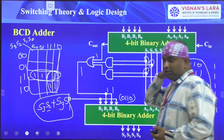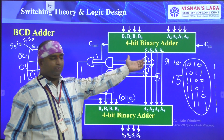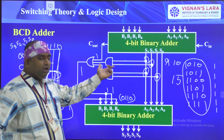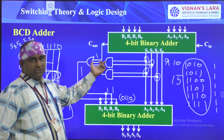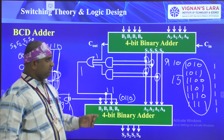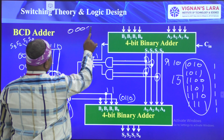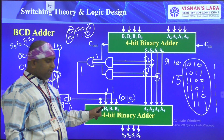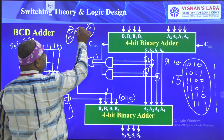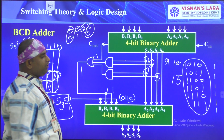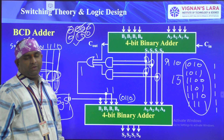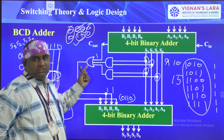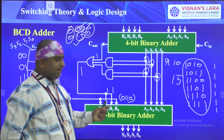When the first addition result is greater than nine, this circuit ensures six is added to the sum. The b3 and b0 positions are always zero. The b2 and b1 bits are driven to one by the AND-OR logic derived from the KMap. This makes the second adder's B input equal to 0110, adding six to correct the invalid BCD result.